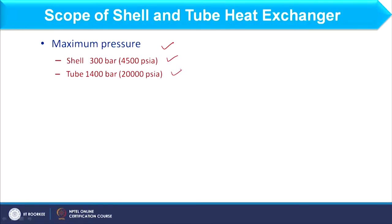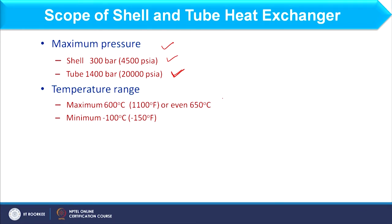Now we will discuss the scope of the shell and tube heat exchanger. Focusing on maximum pressure: on the shell side we can go up to 300 bar and on the tube side up to 1400 bar — a very large pressure range. For temperature, the maximum is 600 to 650 degrees Celsius and the minimum is minus 100 degrees Celsius, giving a huge range from minus 100 to 650 degrees Celsius.